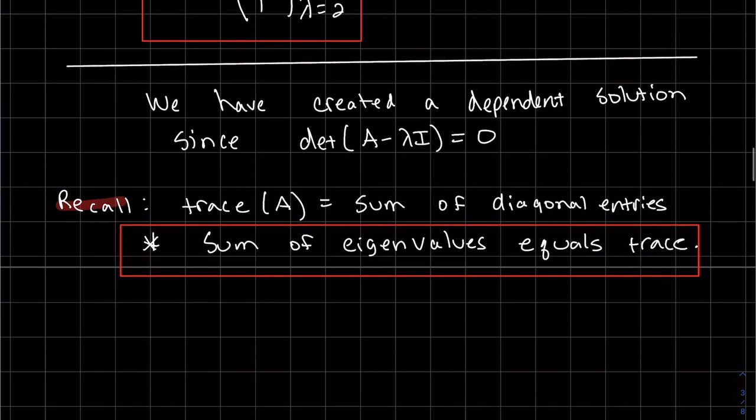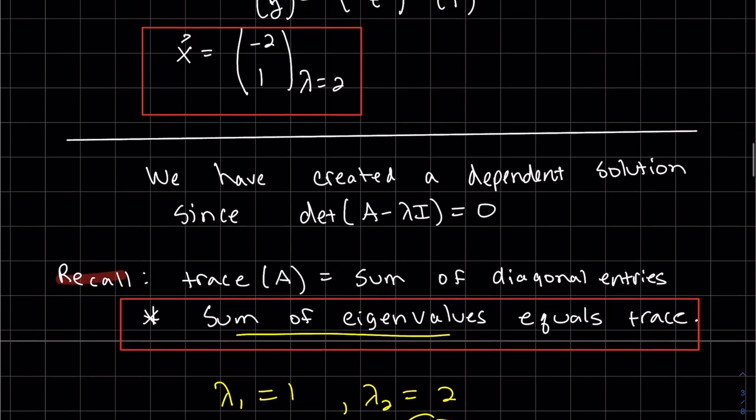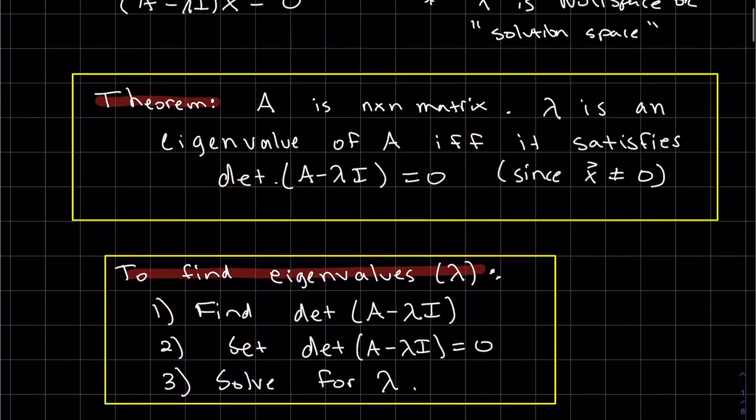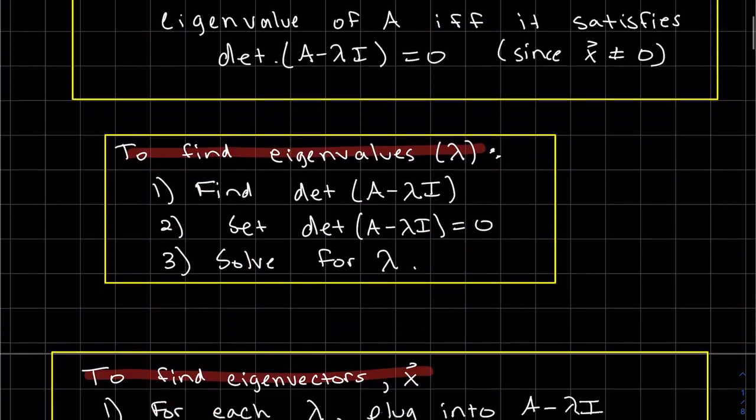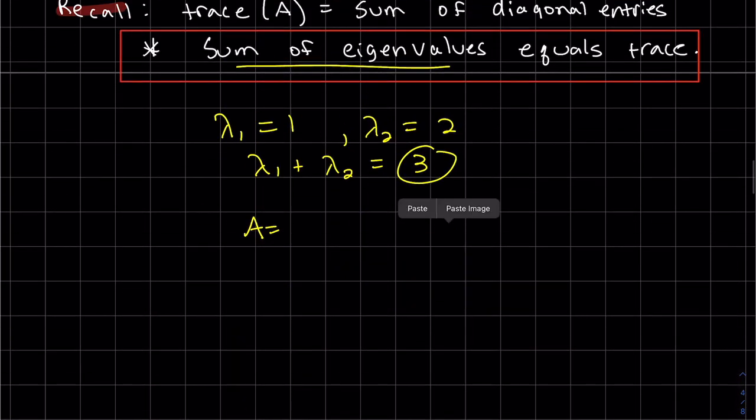So in our last example, we had lambda one equal one, lambda two is equal to two. So the sum of the eigenvalues is three. And our A, our matrix, I forgot what it was, original matrix, not the A minus lambda I. And as you can see here, my trace of A is three plus zero equals three. They do match.